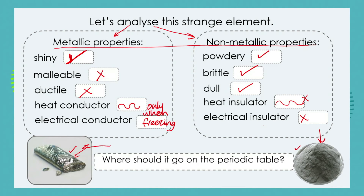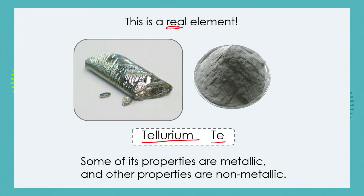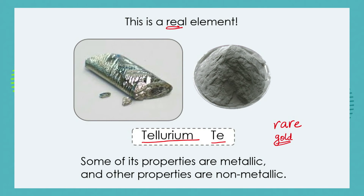So where should we put it on the periodic table — is it a metal or a non-metal? We can see it has characteristics of both. This element is not imaginary; it's a real element called tellurium, with the symbol Te. It is very rare and does not exist in great abundance in the Earth's crust. It is usually found as an alloy together with gold — in fact, it was first discovered inside a gold mine.